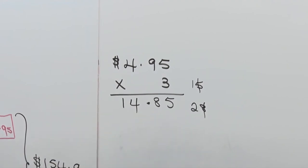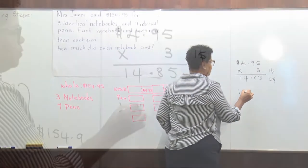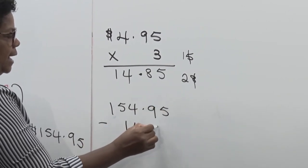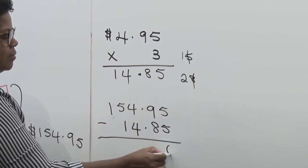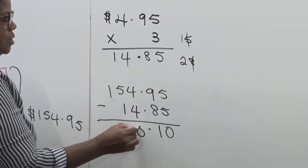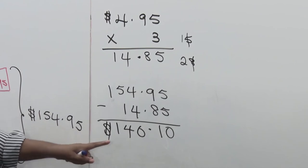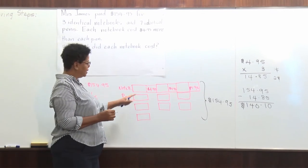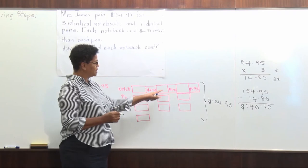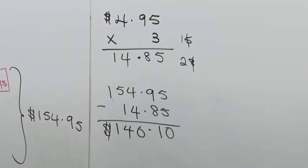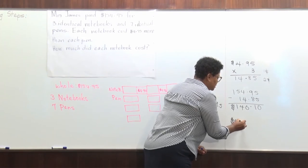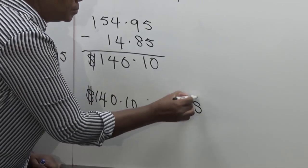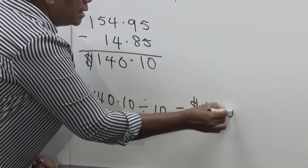I am going to take $14.85 away from $154.95. $154.95 take away $14.85 equals $140.10. This $140.10 can be evenly divided between 10 parts — 3 notebooks and 7 pens equal 10 parts. $140.10 divided by 10 is equal to $14.01.